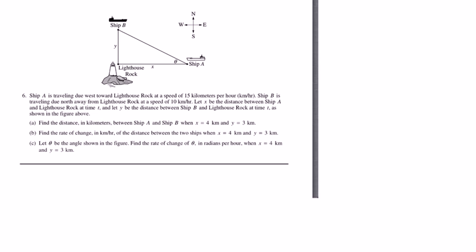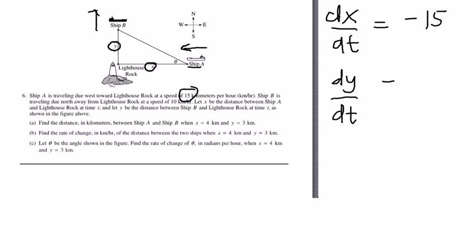Now, ship A traveling west, ship B traveling north, x is the variable for ship A, y is the variable for ship B. x is getting smaller if ship A is traveling due west. That means dx dt is going to be negative 15, and dy dt is going to be positive 10. What I'm starting to do here is organize my information that the problem is telling me, in terms of calculus. The one bit that we have to provide is a name for this distance right here, and we'll call that s. And hopefully you're used to s squared equals x squared plus y squared.